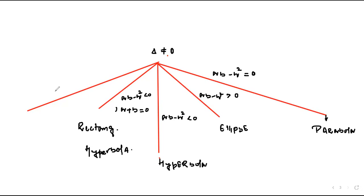One more thing, if a is equal to b and h is zero, in that case, the equation represents a circle.